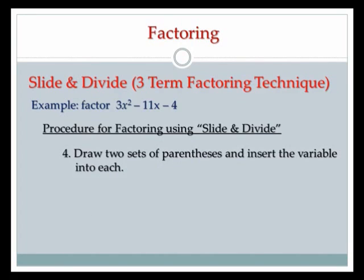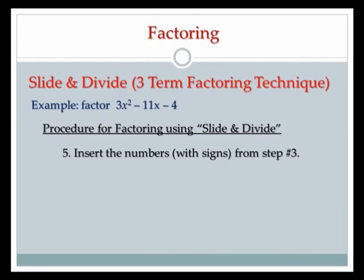Step four: draw two sets of parentheses and insert the variable into each. I'll open up two sets of parentheses and put an x at the front of each one, leaving a little space in case there's a coefficient. Step five: insert the numbers with signs from step three. My numbers were positive 1 and negative 12, so I get x plus 1 and x minus 12.